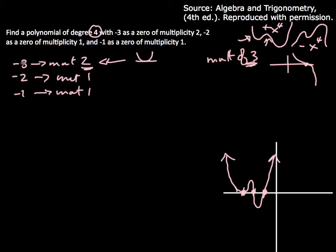Okay, so now to write these x-intercepts as factors, if minus 3 is an x-intercept, then the factor is going to be x plus 3. Multiplicity of 2, that means I'm going to have 2 of them.